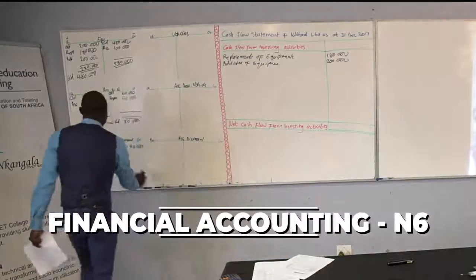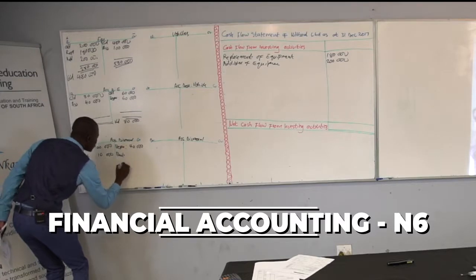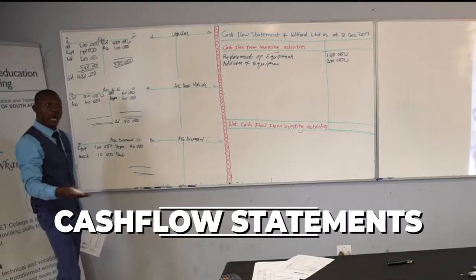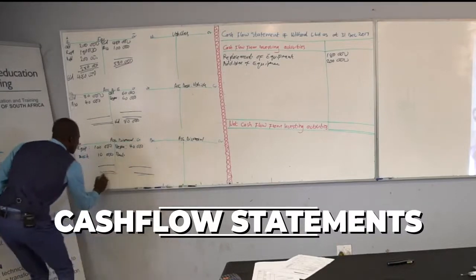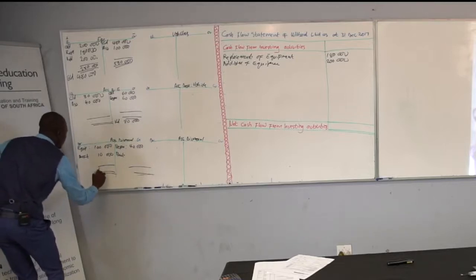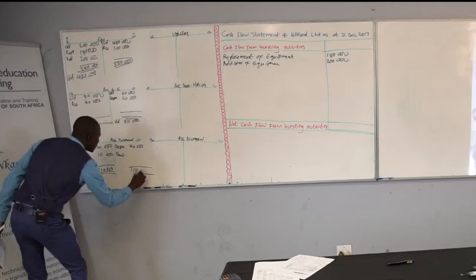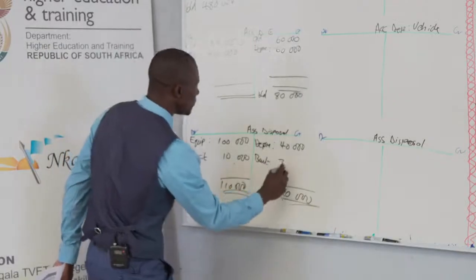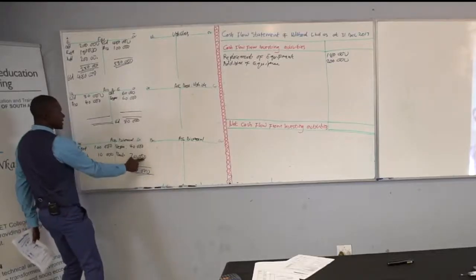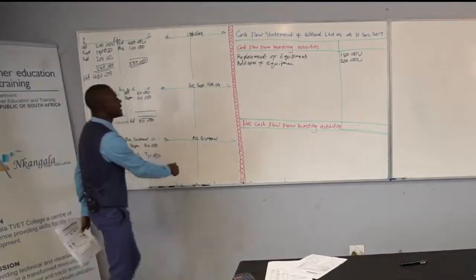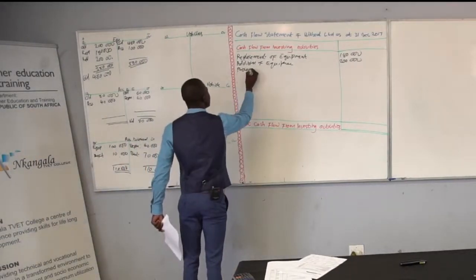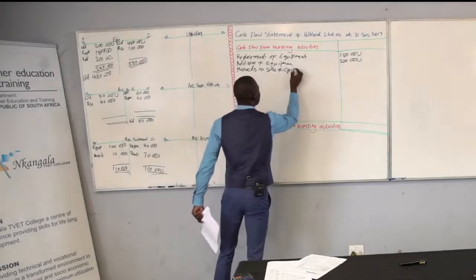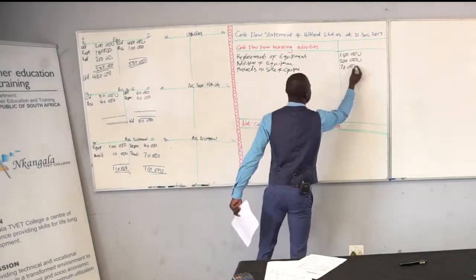Then we calculate the proceeds on sale of assets — the amount you will receive after the sale of an asset. Let's close off the asset disposal account: $100,000 plus $10,000 gives $110,000; $110,000 minus $40,000 gives $70,000. You will receive this amount, which will be credited to your bank account. So we have proceeds on sale of equipment of $70,000.